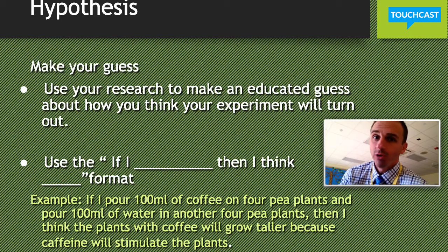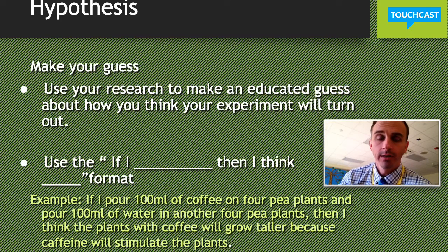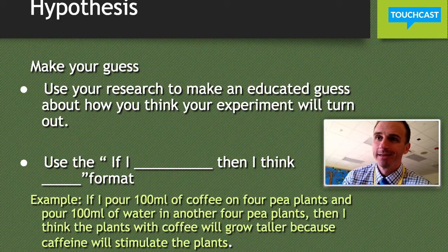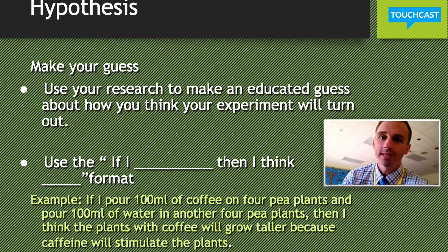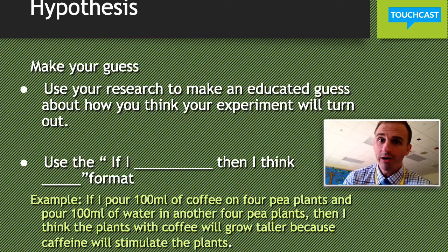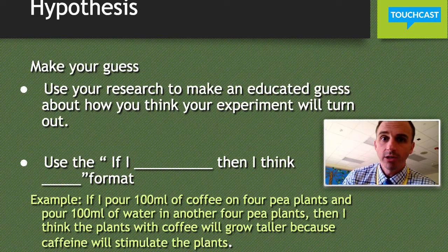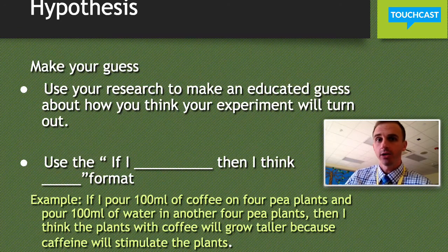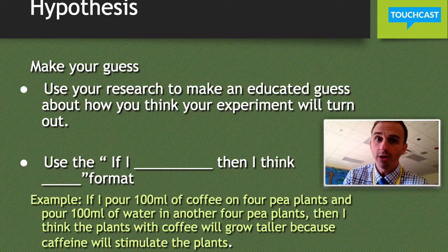The key phrase is 'I think,' because you don't know yet. You can't write a hypothesis after your experiment — it has to be before. Some people want to cheat and put the hypothesis after the experiment because they want to be right. But scientists do this all the time and most of the time they're wrong. Their hypothesis is incorrect. At the end of your science fair project, you're going to make a statement — 'My hypothesis was correct' or 'My hypothesis was incorrect' — and most of the time, it's going to be incorrect.